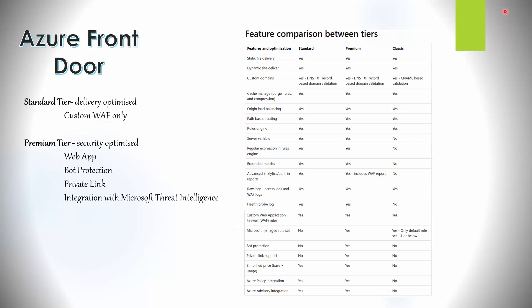There are a couple of tiers with Azure Front Door: Standard and Premium. There is also a Classic tier but that is the older one; you would usually use Standard or Premium. In the portal, the Standard tier is classified as delivery optimized, focusing on performance. Standard includes a web application firewall but you have to create your own rules, whereas Premium is security optimized, with rules provided and managed by Azure, plus bot protection, private link support, and integration with Microsoft Threat Intelligence.